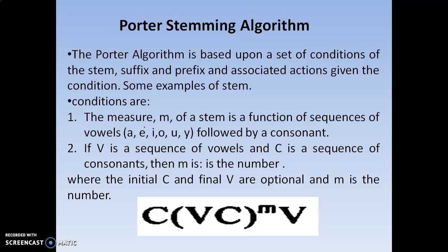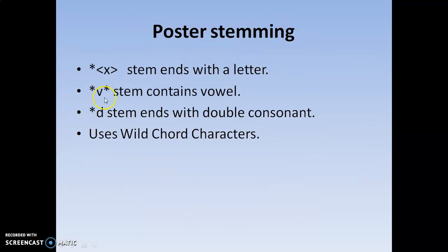Coming to the Porter stemming algorithm, the entire alphabet can be divided into consonants and vowels. The frequent occurrence of vowels followed by consonants is counted as the measure. The total number of occurrences is denoted as the word m. Here, wildcard characters are also used, like the star and the question mark. Star represents multiple characters. These things we have seen in our previous video.